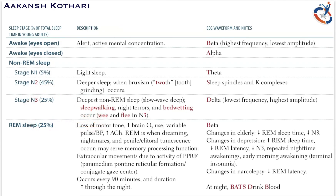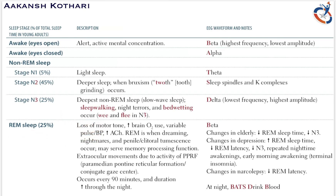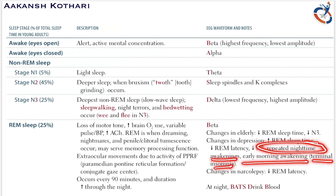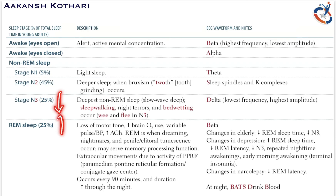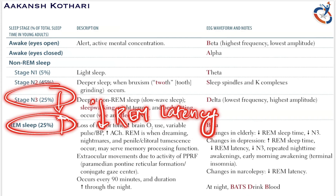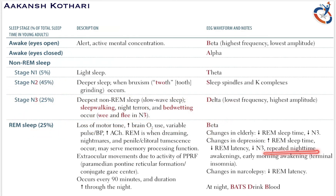In depression, REM sleep increases — this is one of the diagnostic indicators. Changes associated with depression include repeated nightmares, nighttime awakenings, early morning awakening (terminal insomnia), a decrease in N3 sleep, an increase in REM sleep, and a decrease in REM latency.